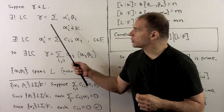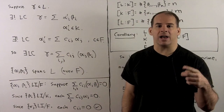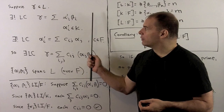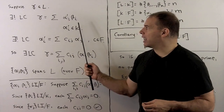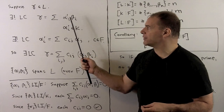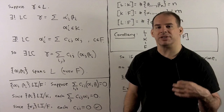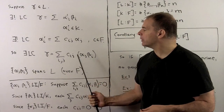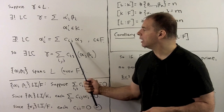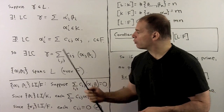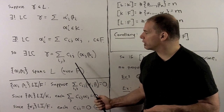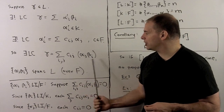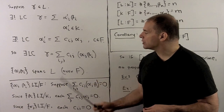For the spanning set property: suppose we have γ in L. We want to show γ can be written as a linear combination of the αβ's with coefficients in F. Because the β's form a basis for L over K, we can write γ as a linear combination of the β's with coefficients in K, say α′ᵢ. In turn, because the α's form a basis for K over F, we can write each α′ᵢ as a linear combination of the α's with coefficients in F, say C's. Putting these together, γ is written as a double sum with coefficients C_{ij} and basis elements αᵢβⱼ. That shows every γ can be written as a linear combination of the αβ's over F.